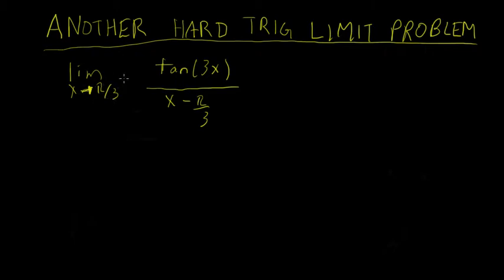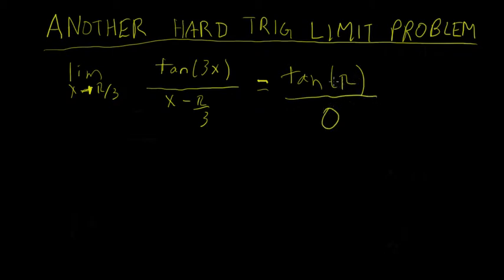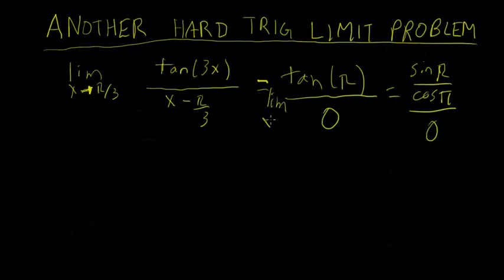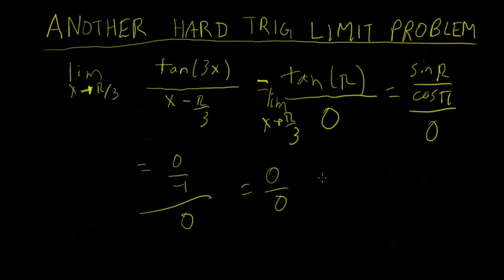As x gets close to pi over 3, the numerator gets close to tangent of pi, and the denominator gets close to 0. Tangent of pi is 0 because it's sine of pi over cosine of pi — that's 0 over negative 1 over 0. So this is 0 over 0, which is an indeterminate form.